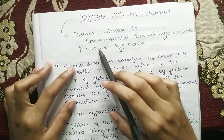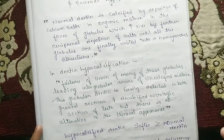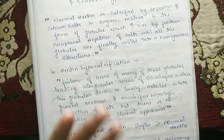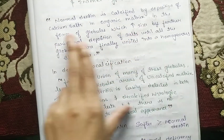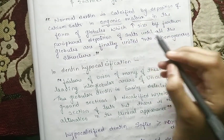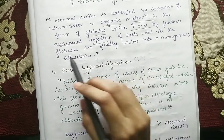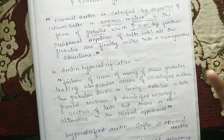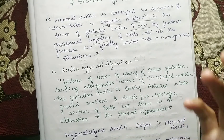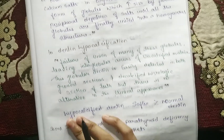It causes conditions similar to environmental enamel hypocalcification and enamel hypoplasia. Normal dentine formation is classified as the deposition of calcium salts of organic matrix in the form of globules, which increase in size by further peripheral deposition of salts until all globules are finally united into a homogenous structure.